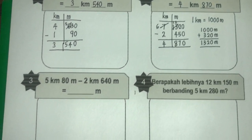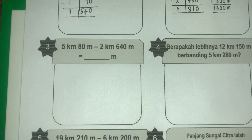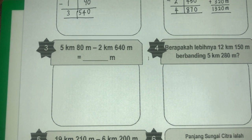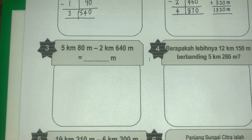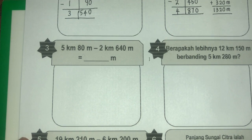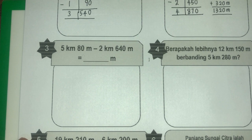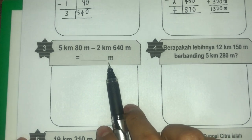Kita tengok soalan yang ke-3: 5 kilometer 80 meter tolak 2 kilometer 640 meter. Jawapan nak dalam meter sahaja. Bermaksud kita kena buat 2 langkah: pertama kita kena selesaikan dulu, lepas tu jawapan dia kita kena tukar semuanya kepada unit meter. Tak boleh ada kilometer langsung.